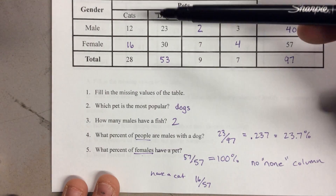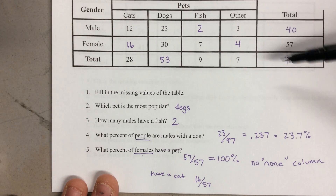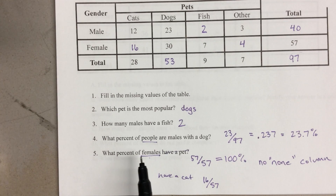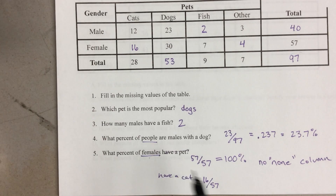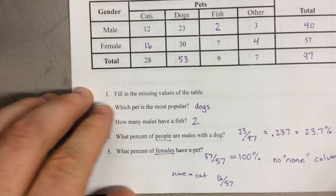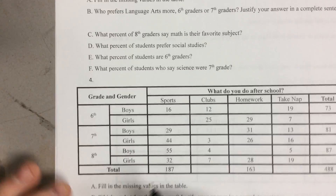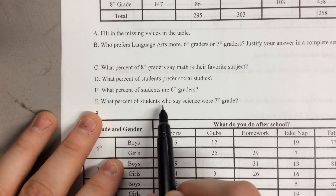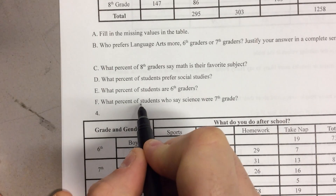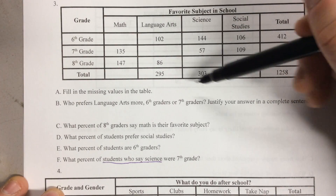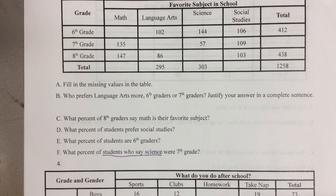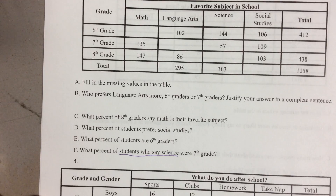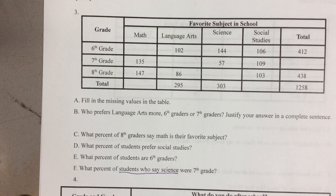To recap: fill in the boxes first. If there are no total columns or total rows, you need to add them. Then pay close attention to what your total is — the question will say 'the percent of something,' and you need to pay attention to how many there are. For example, if a question says 'what percent of students who say science,' your total would be out of the students who say science, like 303. Be careful knowing what your total is and that's all there is to two-way frequency tables.